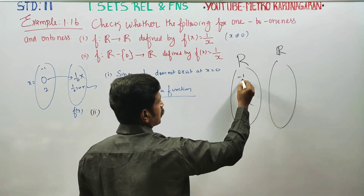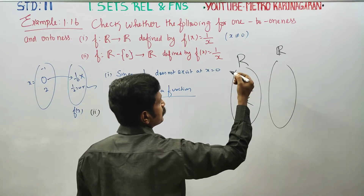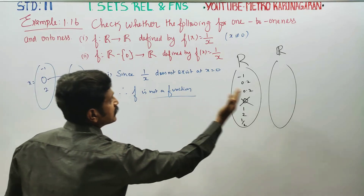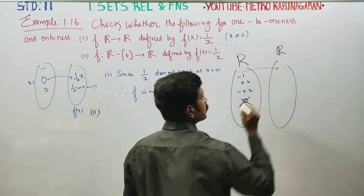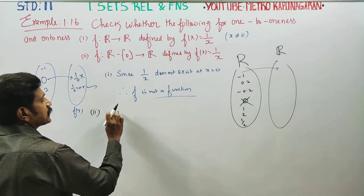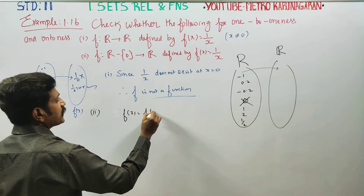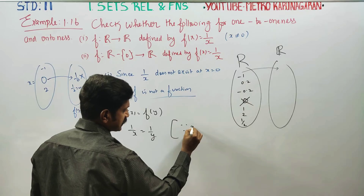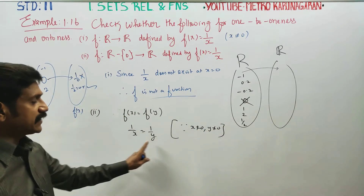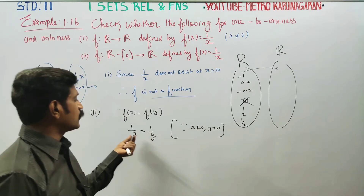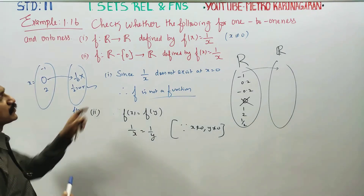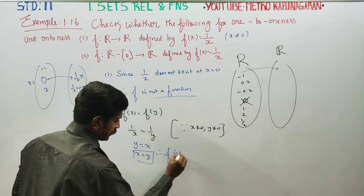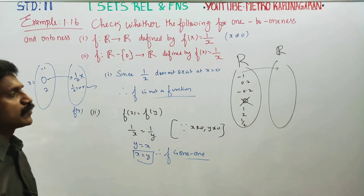To check if f is one-one: assume f(x) = f(y), then 1/x = 1/y. Since x ≠ 0 and y ≠ 0, we can cross multiply to get y = x, that is x = y. Therefore, f is one-one.